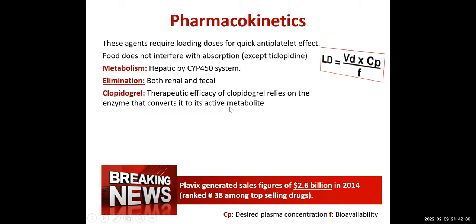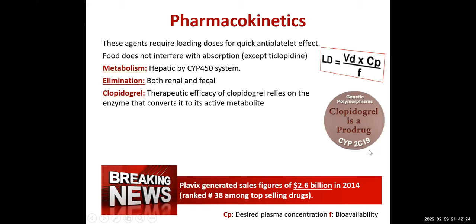Clopidogrel is basically a prodrug. Its therapeutic efficacy relies on an enzyme — CYP2C19 — that converts it to its active metabolite. This enzyme has genetic polymorphisms: some people make more of this enzyme, some make less. Those who make less will not be able to activate clopidogrel sufficiently. It is recommended to do genetic testing for these people — poor metabolizers may be prescribed prasugrel or ticagrelor instead.